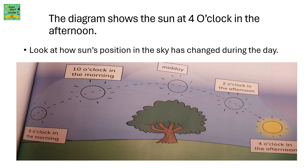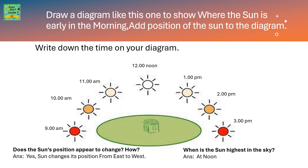The diagram shows the sun at 4 o'clock in the afternoon. Look at how the sun's position in the sky has changed during the day. Draw a diagram like this one to show where the sun is early in the morning. Add the position of the sun to the diagram and write down the time.